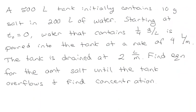That was neat. So here's a problem to work. You have a tank — it's bigger. It originally has 10 grams of salt in 200 liters of water, and it's a 500-liter tank, so you can put more water in it. Water with a certain concentration is poured in faster than it's being drained — going in at 4 liters per minute, coming out at 2 liters per minute.